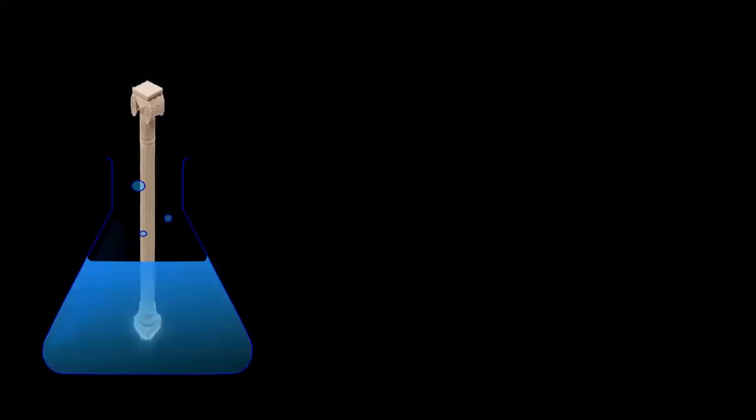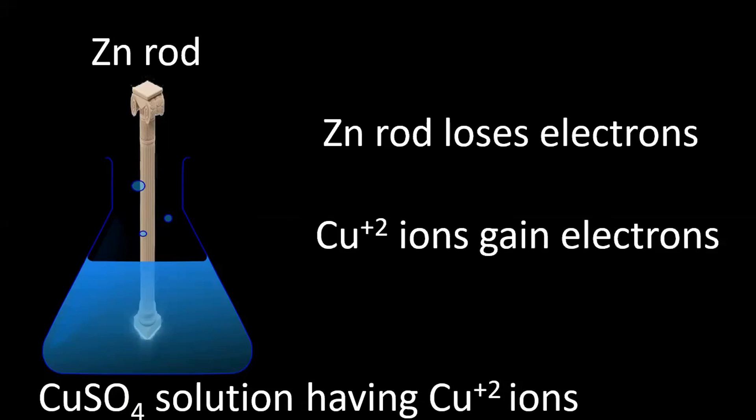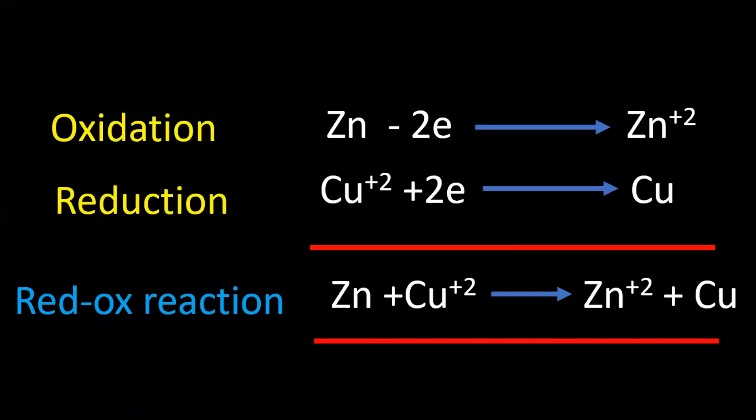Second example: a zinc rod is taken in copper sulfate solution having Cu²⁺ ions. Zinc rod loses electrons; copper ions in the beaker gain electrons. Zinc loses electrons, copper gains electrons. Cu²⁺ gains electrons.